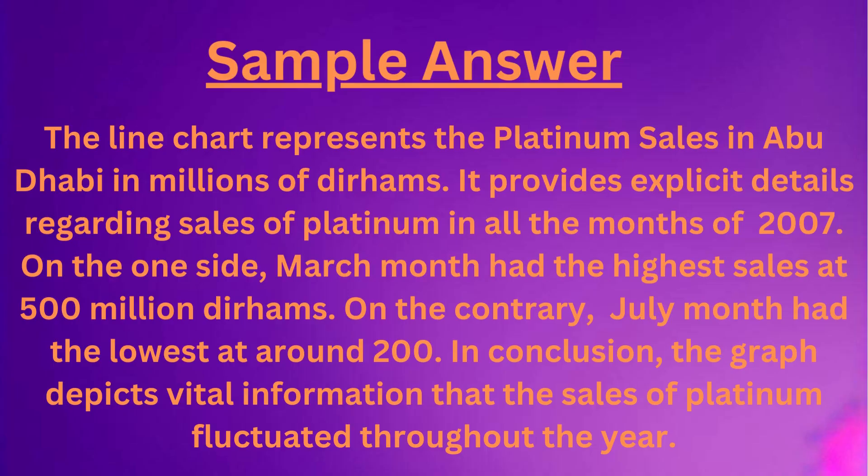The line graph represents the platinum sales in Abu Dhabi in millions of dirhams. It provides explicit details regarding sales of platinum in all the months of 2007.